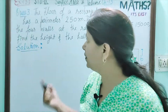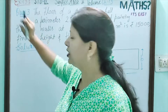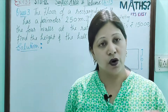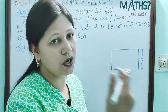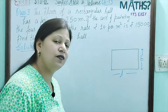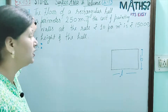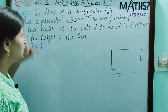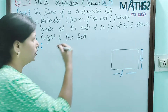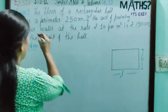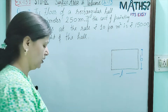In this video, we are going to start with question number 3. For question numbers 1 and 2, you can watch our previous video. So, let us read this question. In this question, the floor of a rectangular hall has a perimeter of 250 metres.